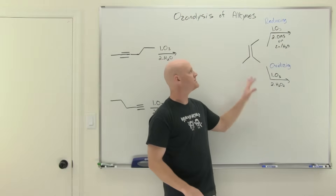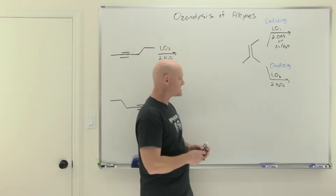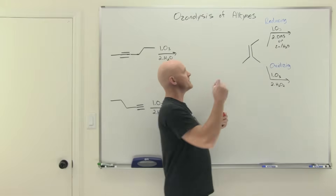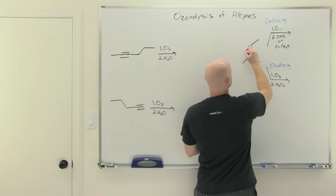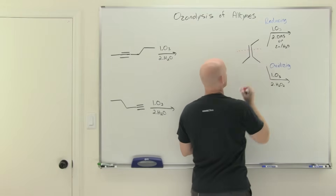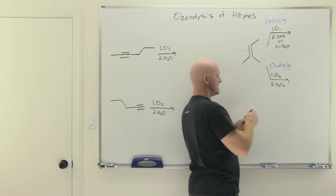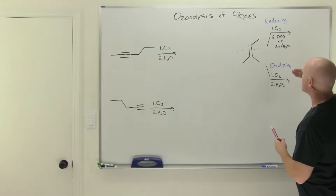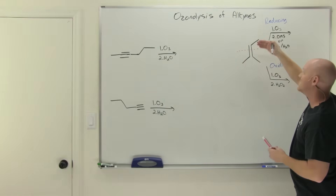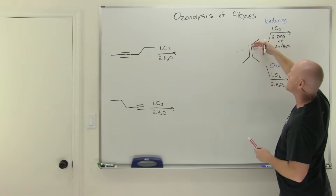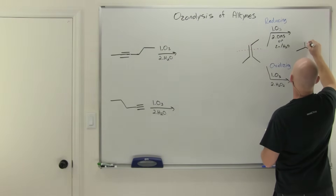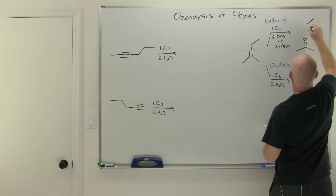Let's start by reviewing ozonolysis of alkenes. You might recall that we are going to cleave our carbon-carbon double bond. We have two options: reducing conditions or oxidizing conditions. But in either case, you're going to replace that carbon-carbon double bond on both sides of the molecule with a carbon-oxygen double bond.